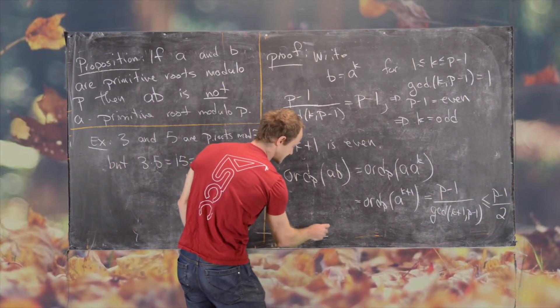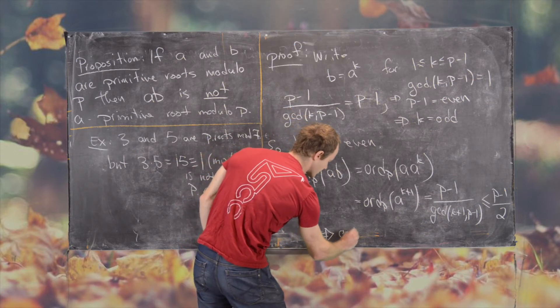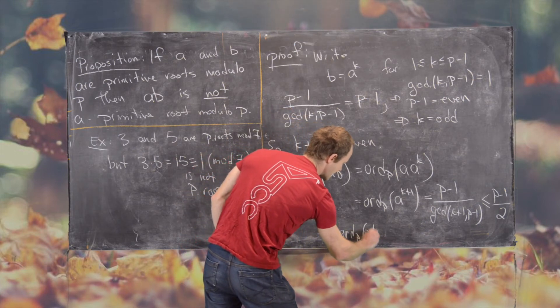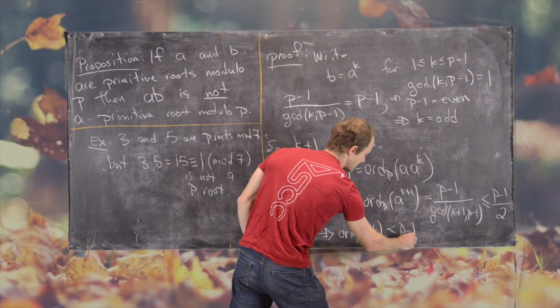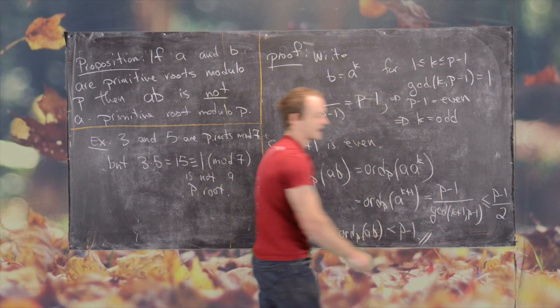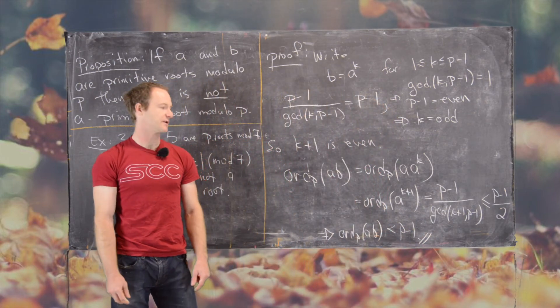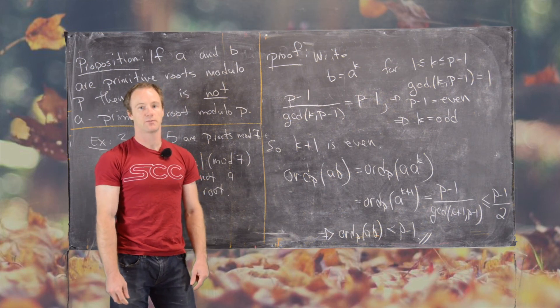But that tells us that the order modulo P of A times B is strictly less than P minus 1, which tells us that it's impossible for it to be a primitive root.